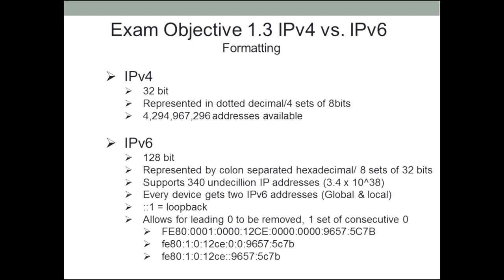IPv6 is represented by colon-separated hexadecimal — eight sets of 32 bits, each set separated by colons. It supports over 340 undecillion IP addresses — that's 3.4 times 10 to the 38th power worth of individual addresses. That's enough addresses that every device that can possibly connect to the internet can have its own IPv6 address, and every device that does connect to the internet now does have its own IPv6 address.